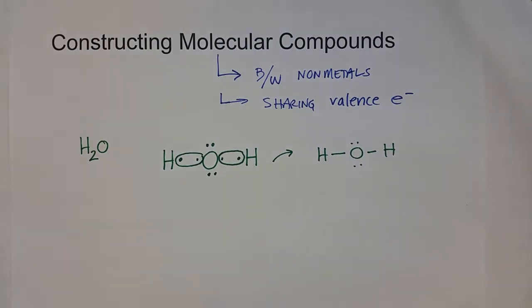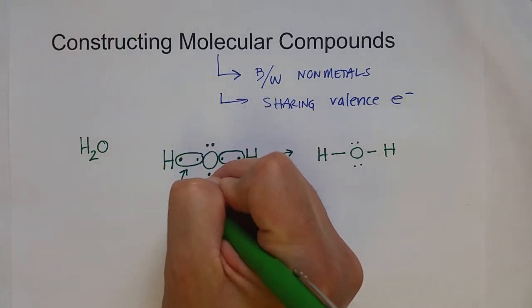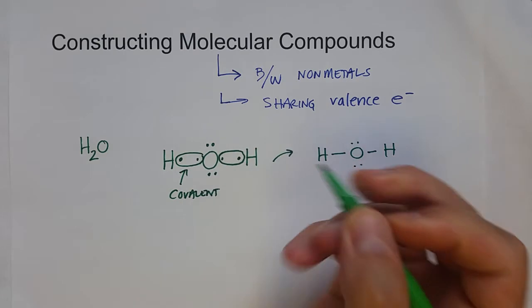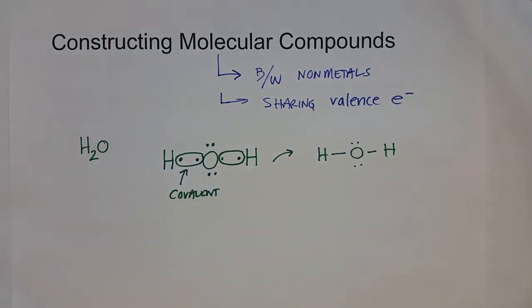We represent the shared covalent bond as a single line. That's why we said when introducing the concept of a covalent bond that it is a pair of electrons that each atom is sharing.